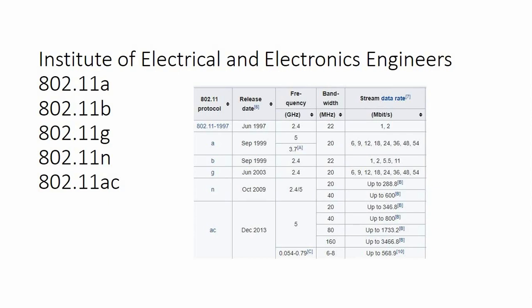802.11a was first introduced in June 1997. The first is 2.4GB. It's up to 2.5MB per second. The first is 802.11a, September of 1999. It's 5GB and it's 3.7GB. The highest is 5.5GB.